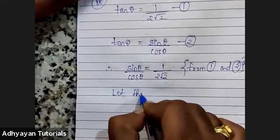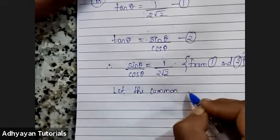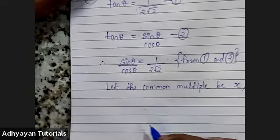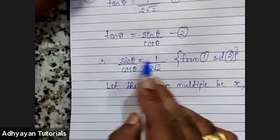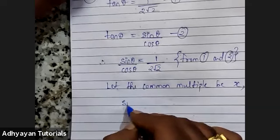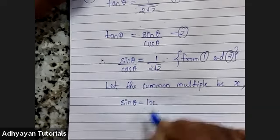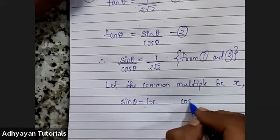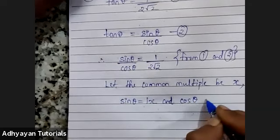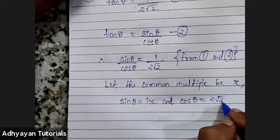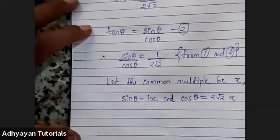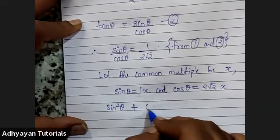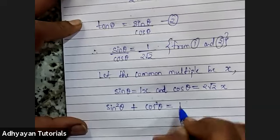Let the common multiple be x. So sin θ = 1x and cos θ = 2√2 · x. Now I will use the identity: sin²θ + cos²θ = 1. What is sin θ? 1x. What is cos θ? 2√2 · x.